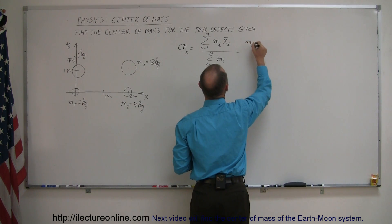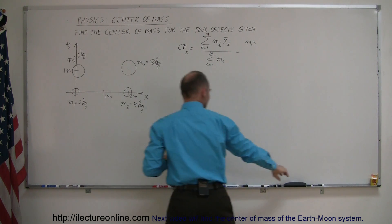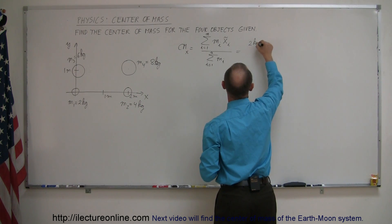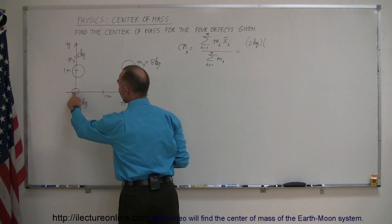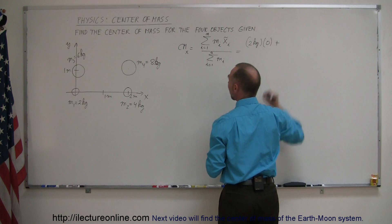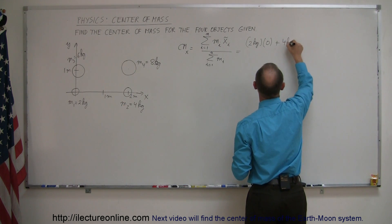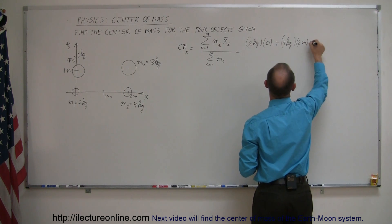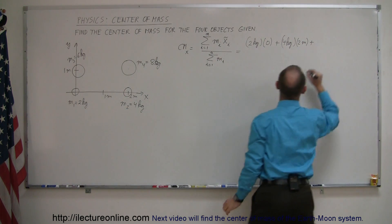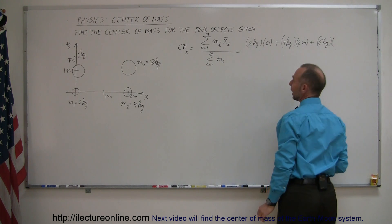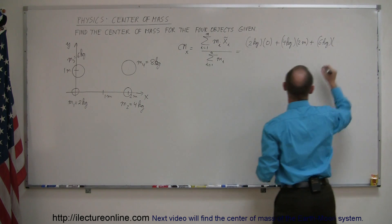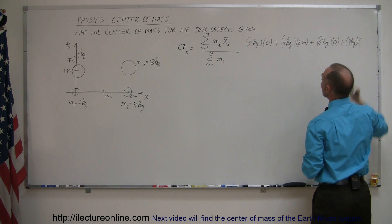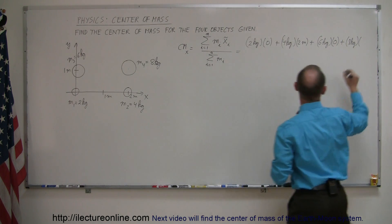In the numerator, mass 1 is 2 kilograms times its x-coordinate, which is 0 in this case, plus mass 2 which is 4 kilograms times its x-coordinate of 2 meters away from the origin — so times 2 meters — plus the third mass, which is 6 kilograms, multiplied by its x-coordinate, which is right above the origin, so that's 0 again, plus the final mass m4, 8 kilograms, times its x-coordinate which is also 2 meters away, so times 2 meters.